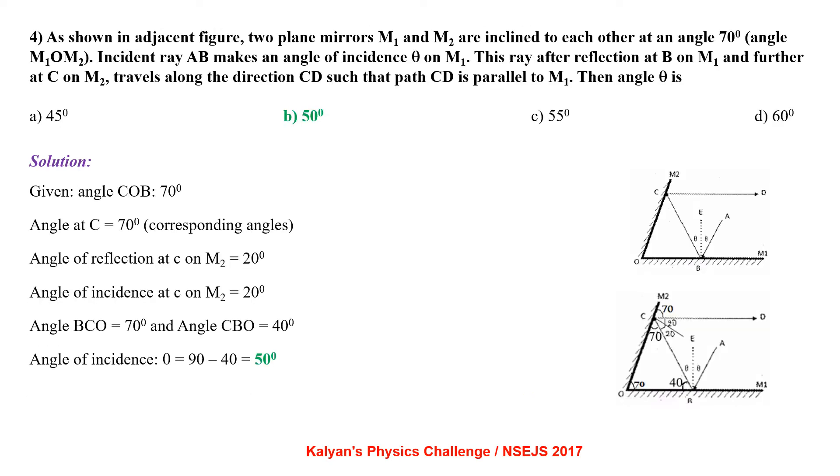As shown in adjacent figure, two plane mirrors M1 and M2 are inclined to each other at an angle 70 degrees. Incident ray AB makes an angle θ on M1. This ray after reflection at B on M1 and further at C on M2 travels along the direction CD such that the path CD is parallel to M1. The angle θ is.